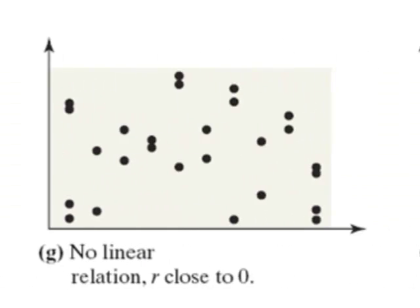And here's a situation where there's no linear trend in the data at all. As x increases, we don't see any predictable linear pattern in y, so what we'd see here is a correlation coefficient r close to 0, indicating no linear trend in the data, positive or negative.